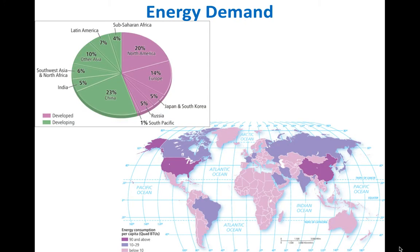Here's the demand side. The developed parts of the world tend to use much more of the energy than other parts of the world. You can see that the United States and China definitely stand out on the map. The darker purple countries also stand out compared to much of the rest of the world.